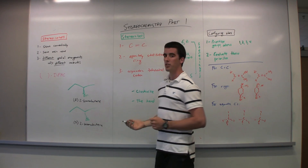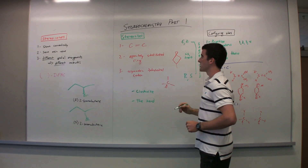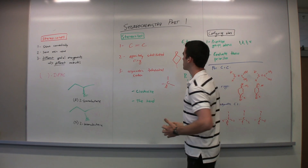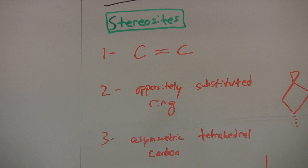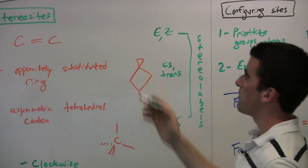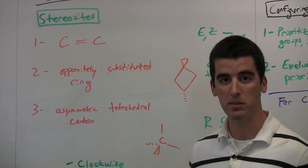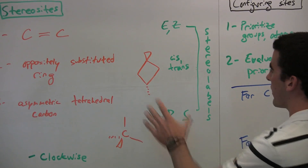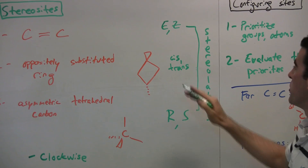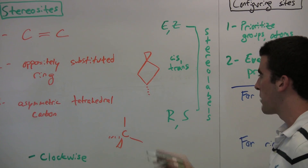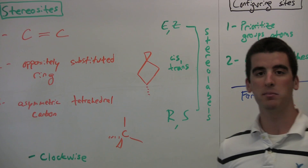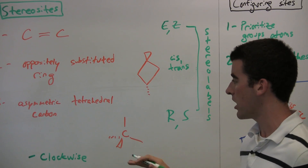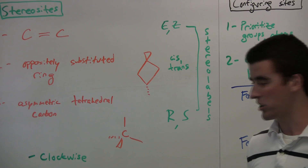So how do we know what the stereosites are? There are three kinds of stereosites in stereochemistry: double-bonded carbons, oppositely substituted rings, and the last and probably most common one you'll see — asymmetric tetrahedral carbons. With double-bonded carbons, if you find a double-bonded carbon with different groups bonded off of it, you can get either the E or Z stereo label. With oppositely substituted rings, you get the cis or trans stereo label. And with the asymmetric tetrahedral carbon, which has four different paths from that carbon, you get either the R or S stereo configuration.